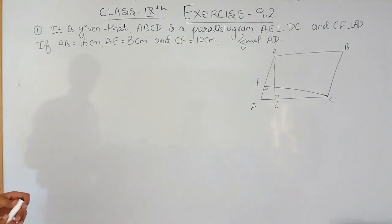The question says it is given that ABCD is a parallelogram where AE is perpendicular on DC and CF is perpendicular on AD. If the length of AB is equal to 16 cm, AE is equal to 8 cm and CF is equal to 10 cm,